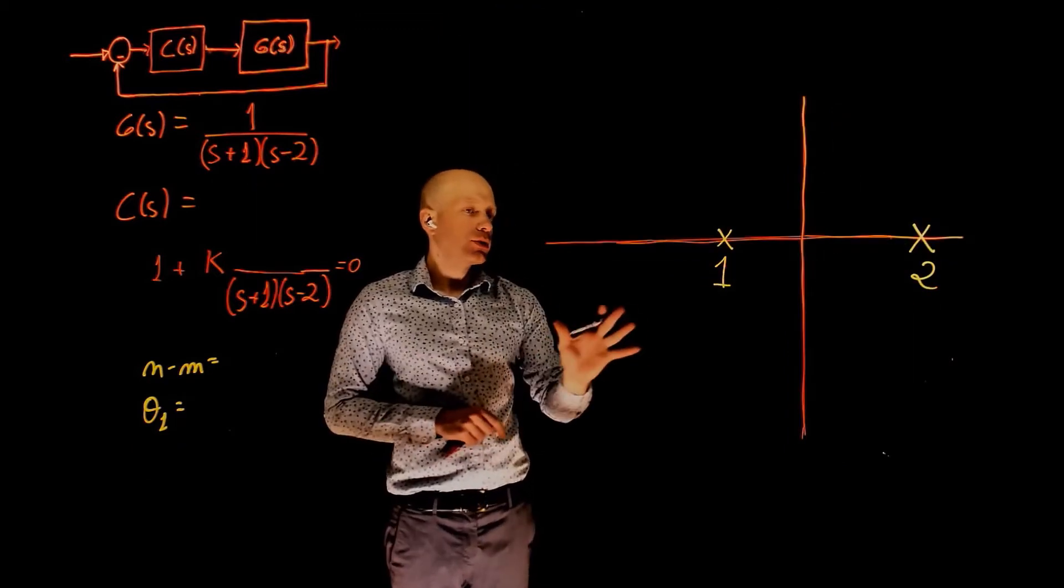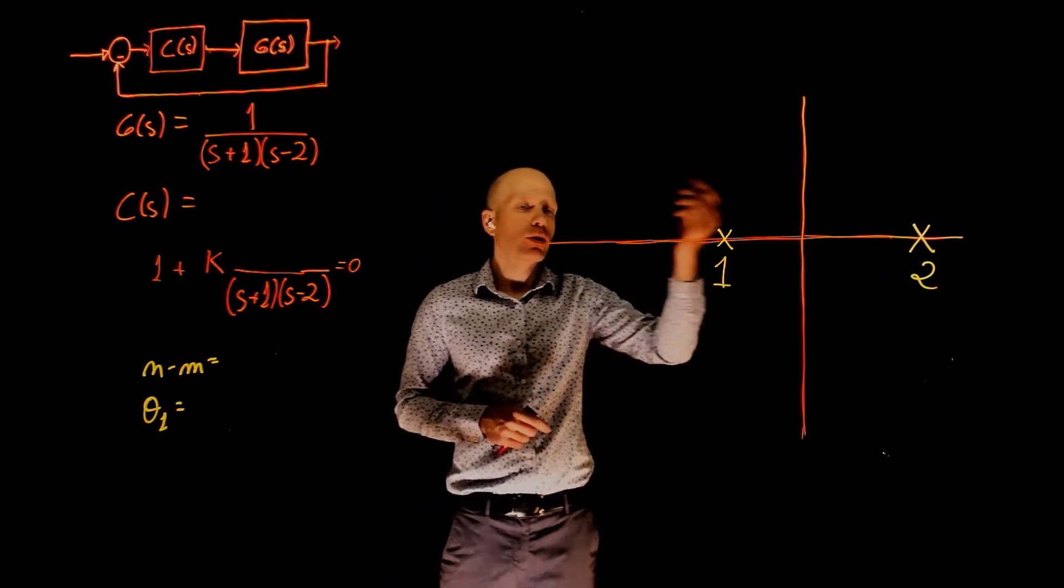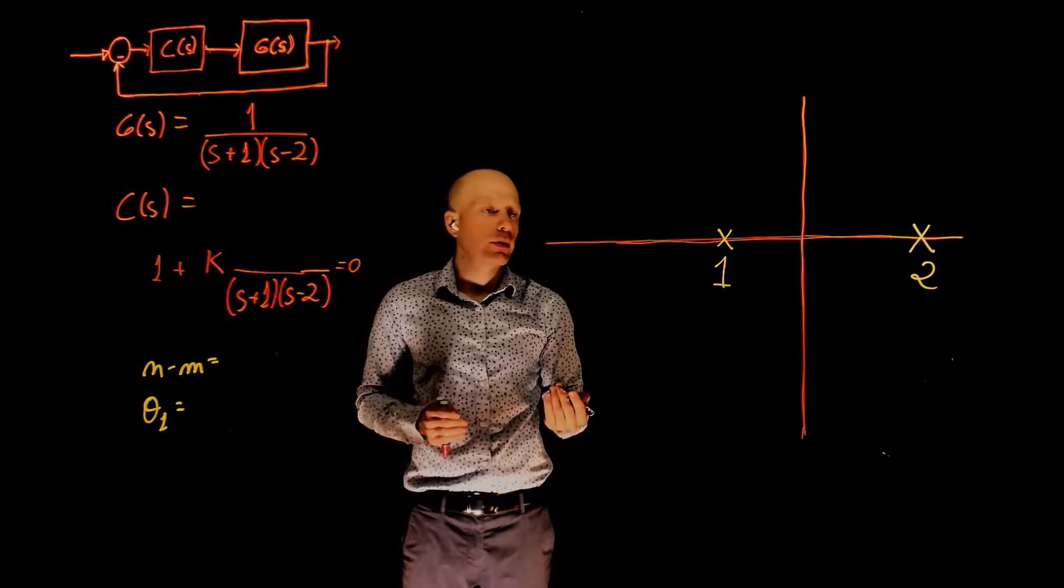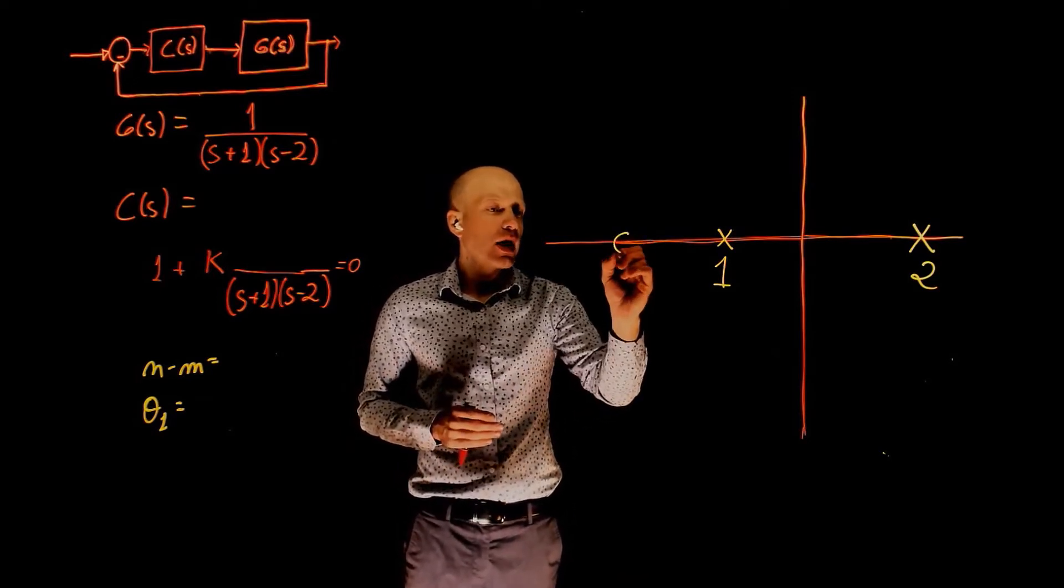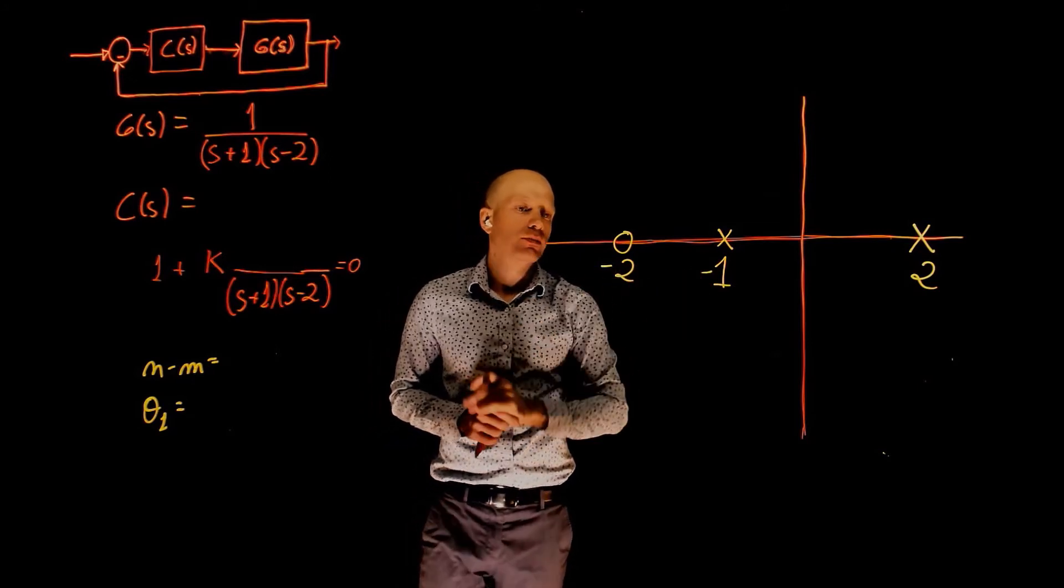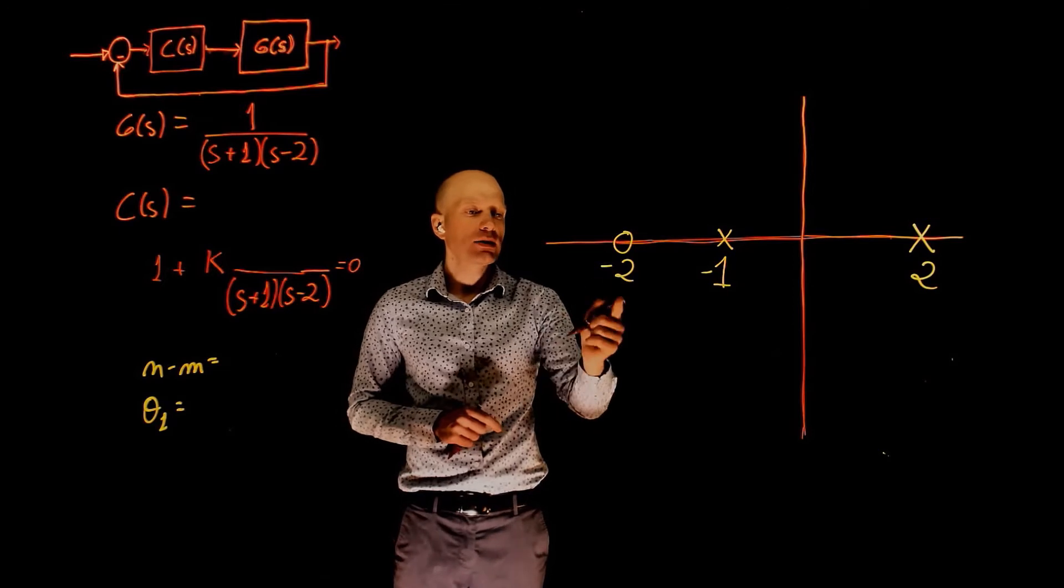Let's add more zeros on the stable side of the s plane to see if we can make this unstable pole come to that zero, and then make it a closed loop system stable. We can place that zero anywhere. I'm going to place it at negative 2. It could be anywhere. But let's see what happens if you place that at negative 2.